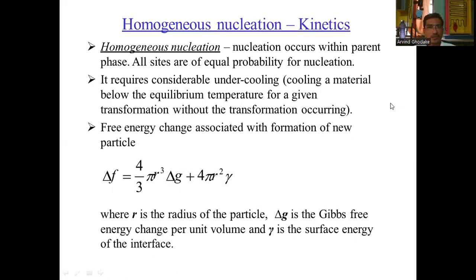Homogeneous nucleation kinetics: homogeneous nucleation occurs within the parent phase where all sites are equal in probability of nucleation, requiring considerable undercooling — that is, cooling of a material below the equilibrium temperature for a given transformation without transformation occurring. The free energy change associated with the formation of new particles is represented by: ΔF = (4/3)πr³ΔG + 4πr²γ, where r is the radius of the particle, ΔG is the Gibbs free energy change per unit volume, and γ is the surface energy of the interface.